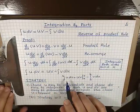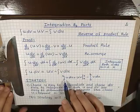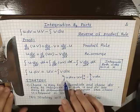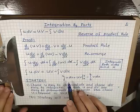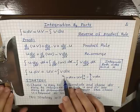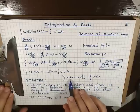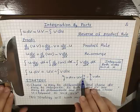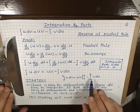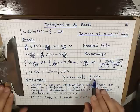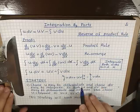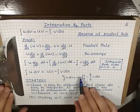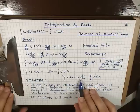If there are limits, then this is a definite integral, and we get the integral from a to b of u dv equals uv evaluated from a to b, minus the integral from a to b of v du. Notice this part of the equation is already integrated.